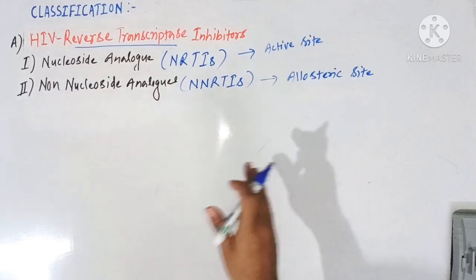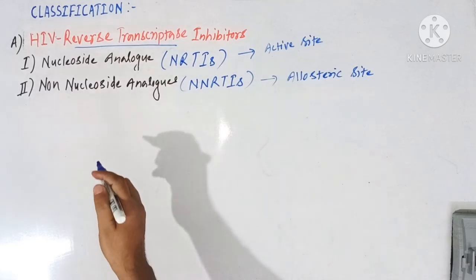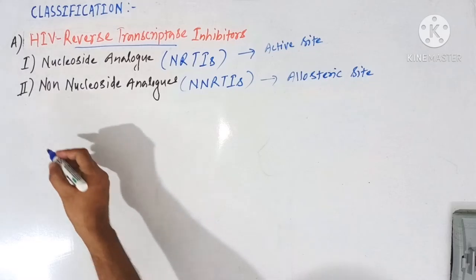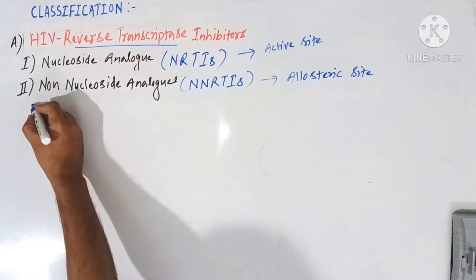And thus, in this way, these non-nucleoside analogues inhibit this reverse transcriptase enzyme. So what are the different drugs which come under this class? We will discuss them one by one by their chemical nature.